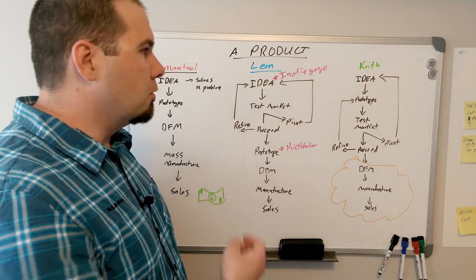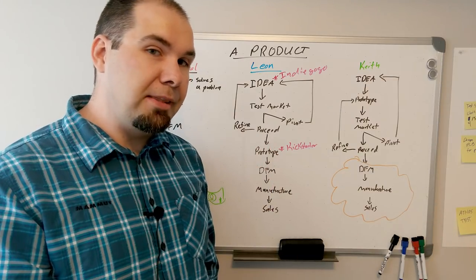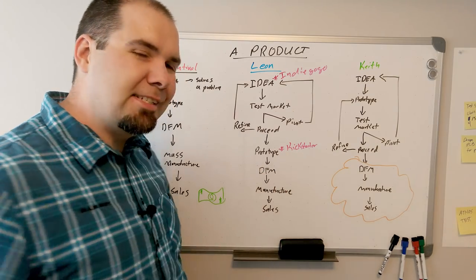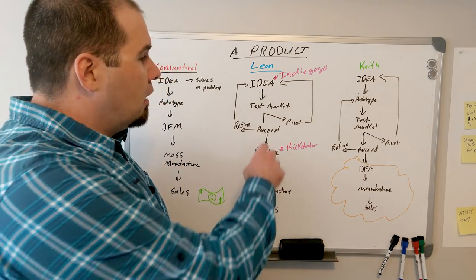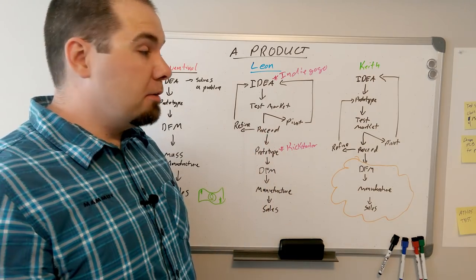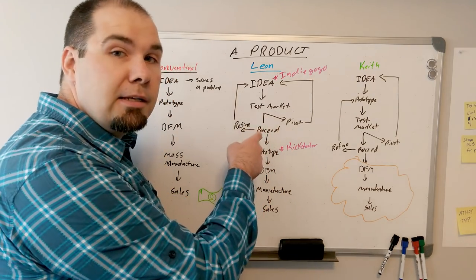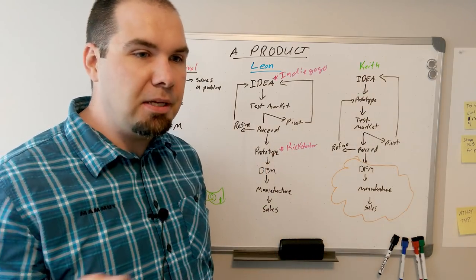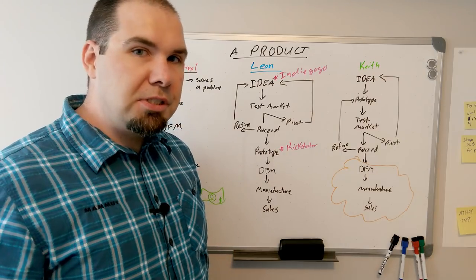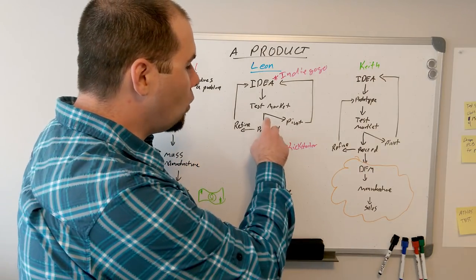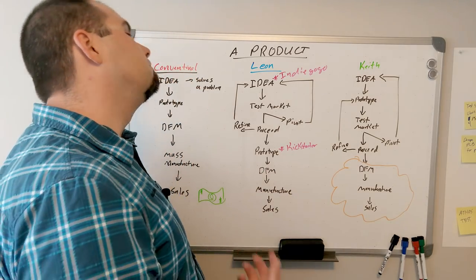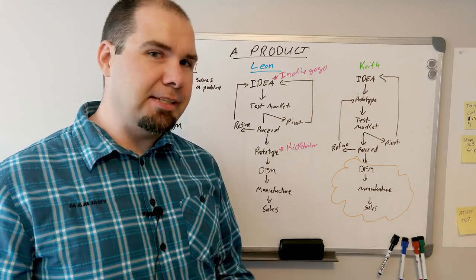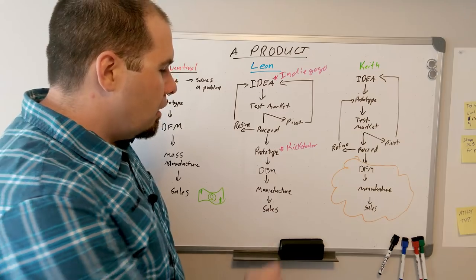So the lean startup is: you have an idea, find a way to test the market. So Indiegogo and Kickstarter were those initial methods. Kickstarter's changed a bit now and they won't really allow you to do anything until down here. But they test the market, and if there's strong market reception, they may proceed. They may proceed with refining and changing the idea a little bit and more market testing. This can be a landing page, this can be customer interviews, this can be all sorts of different things. Or they pivot—they don't see a market, we still have this idea, but maybe we have to change the market, maybe we have to change the idea. And they can loop back.